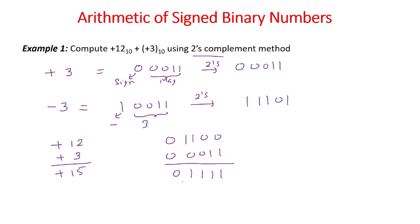There is no carry here, and the sign bit is 0, which indicates a positive number. If the sign bit is 0, we read the result as it is — which is 15. So the answer is plus 15, which is perfectly correct, indicated by 0 1 1 1 1 in two's complement form.